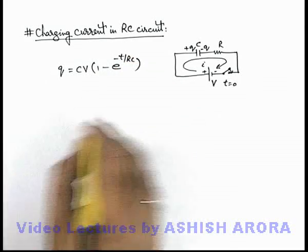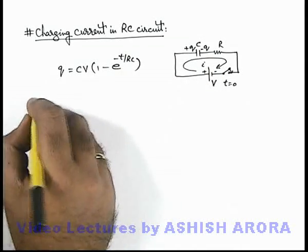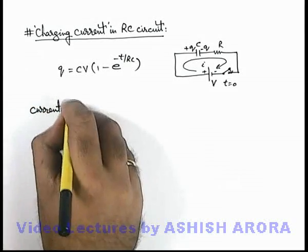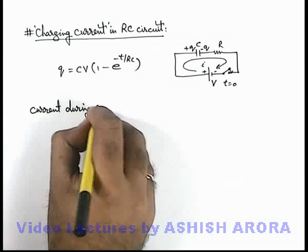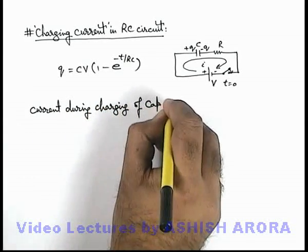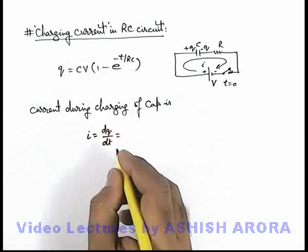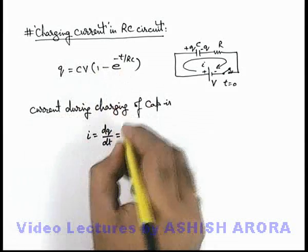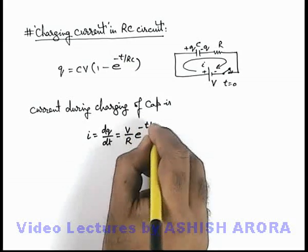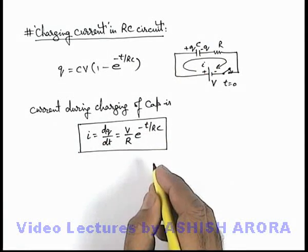Now, if we calculate the value of the current supplied by the battery during charging of the capacitor — which is called the charging current — we can write this current as dQ/dt. If we just differentiate the charge expression, we get I = (V/R) × e^(-t/RC). This is the expression for the current responsible for charging the capacitor.